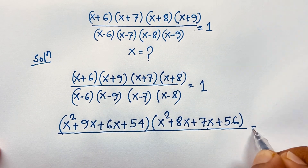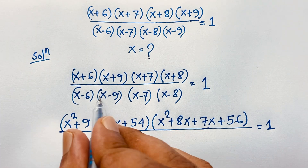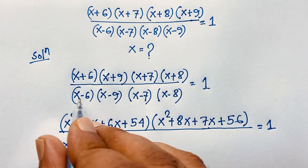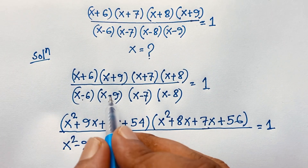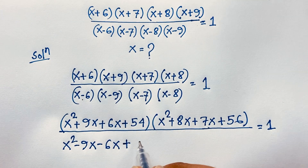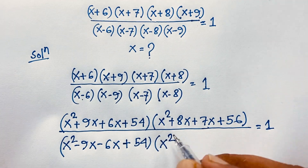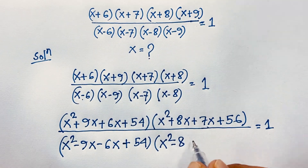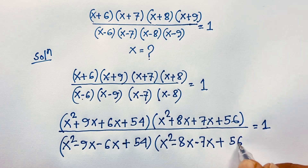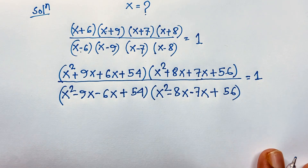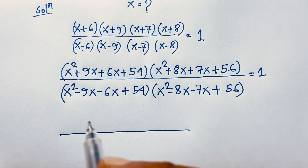This equals 1. For the denominator, (x-6)(x-9) gives x² - 9x - 6x + 54, and because of the two negative signs the constant becomes positive 54. Then (x-7)(x-8) gives x² - 8x - 7x + 56, and the whole expression equals 1.